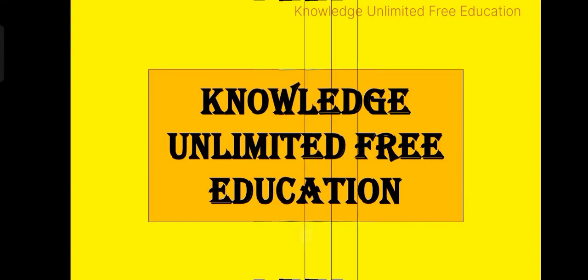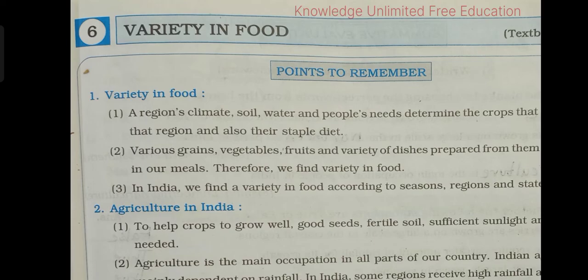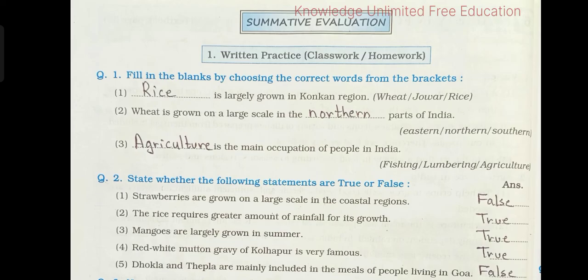Hello everyone, welcome back. Today we will be solving lesson number six of your workbook, that is 'Variety in Food'. Let's begin question number one: fill in the blanks by choosing the correct words from the brackets. One, dash is largely grown in the Konkan region — answer: rice. Number two, wheat is grown on a large scale in the dash parts of India — answer: northern. Third, dash is the main occupation of people in India — answer: agriculture.